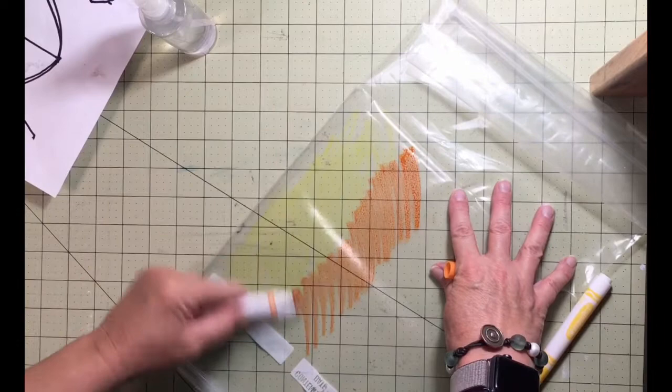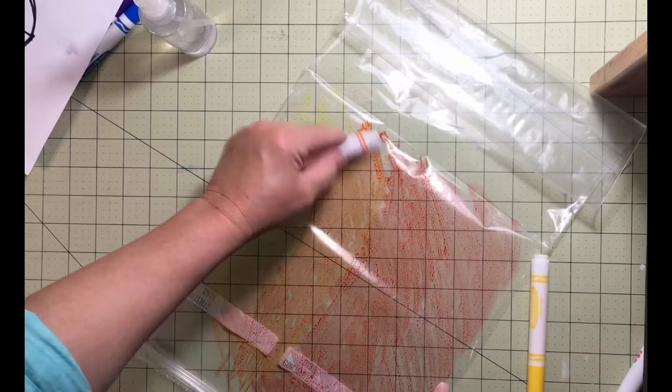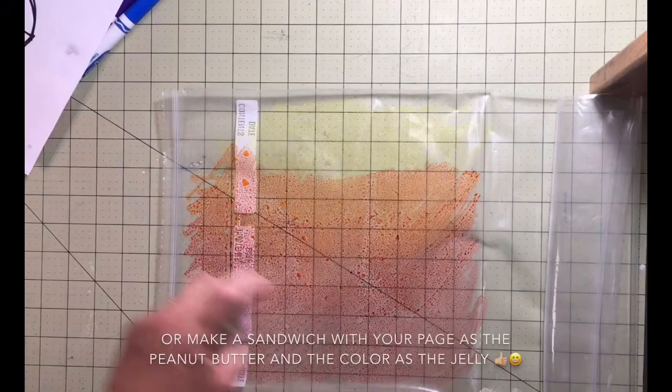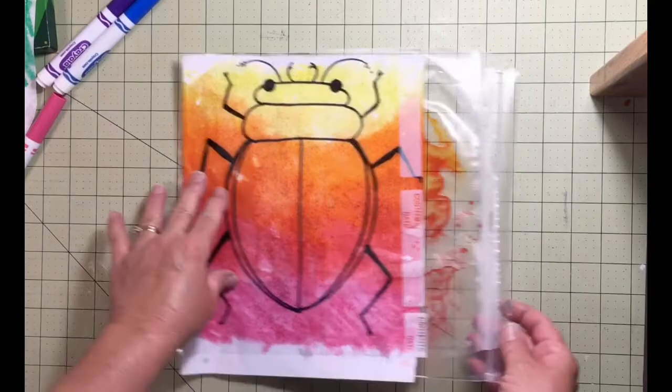You can clean off your baggie with a Kleenex. This is the cleanest printing method imaginable. Nothing like what we've done in class with paint. So much cleaner. So this is great for in your house. Also, you can use this method in your journal. You would simply just turn your journal page over on top of the plastic instead of putting the plastic on top of the drawing. That's so much fun.